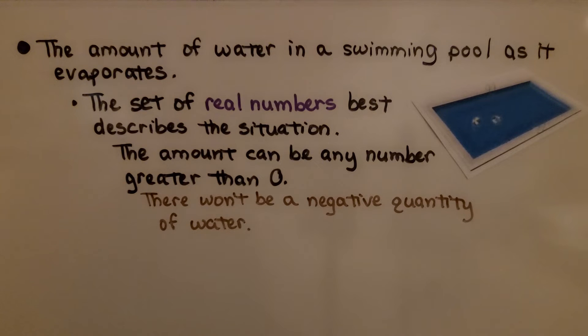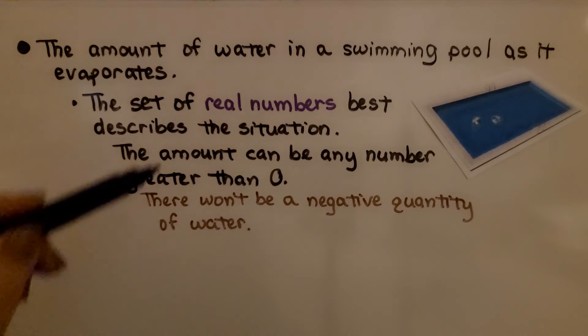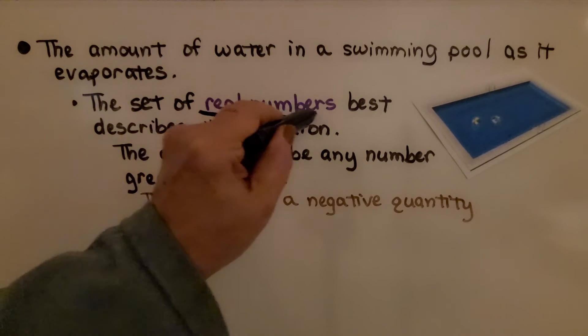So what set of numbers describes this situation? The amount of water in a swimming pool as it evaporates. The set of real numbers best describes the situation. The amount can be any number greater than zero. There won't be a negative quantity of water. So we can say real numbers best describes this situation.